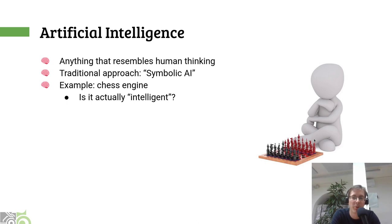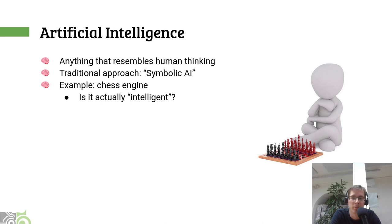So the next section is called deep learning. Before we can actually start talking about deep learning itself, I think it's necessary to at least mention what artificial intelligence as such is, because deep learning is kind of a subfield of artificial intelligence. I'm sure that there has been countless hours of discussions about what actually constitutes artificial intelligence, but for the sake of this talk, I will go with a very broad definition. Let's say that artificial intelligence is anything that resembles human thinking that's going on in the computer.